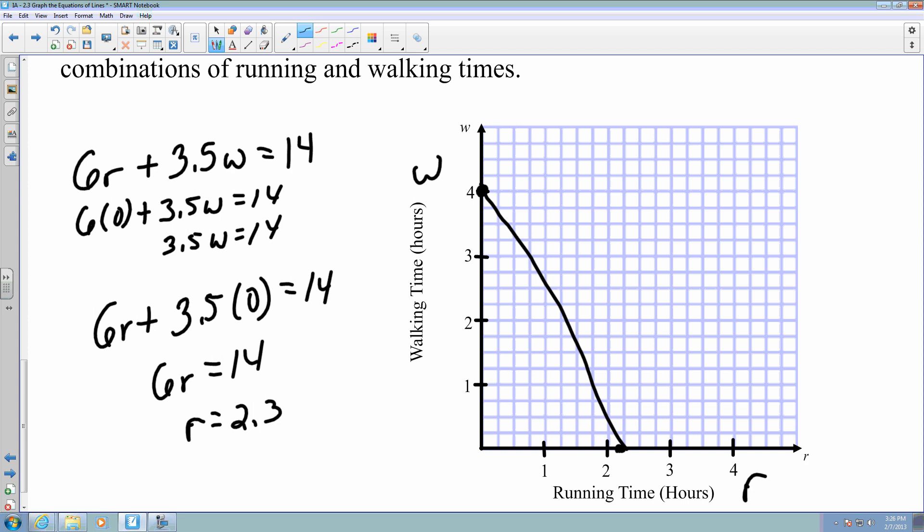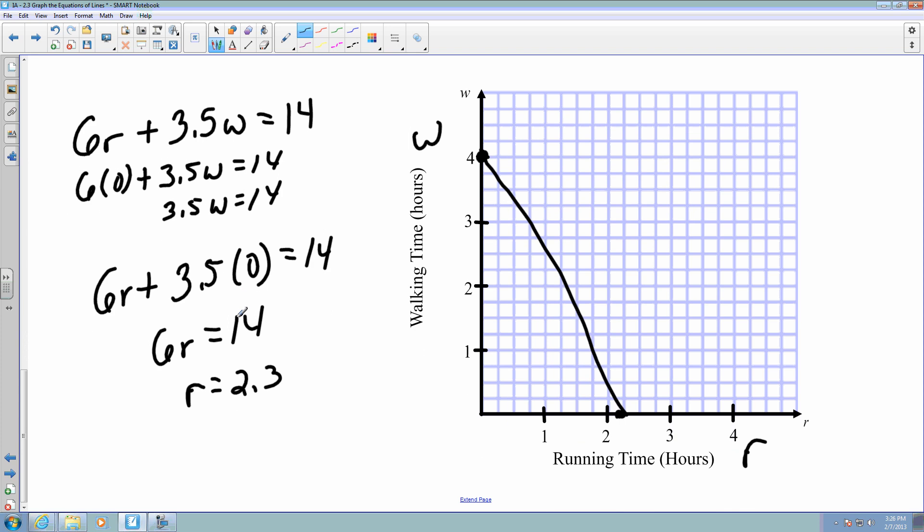So in this line here is any different combinations of running and walking. So let's say I make the assumption that I ran for an hour. So if I ran for one hour, how many hours did I walk the 14 miles? Well, 6 times 1 is 6, plus 3.5w equals 14. If I were to subtract 6 from both sides, I would get 3.5w equals 8. And then 8 divided by 3.5, my w would equal something like somewhere around 2.3. So if my r equaled 1, my w would equal 2.3, and I'm looking for other possible combinations like that.